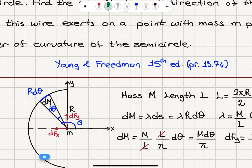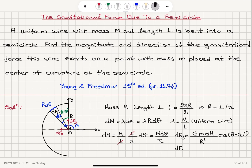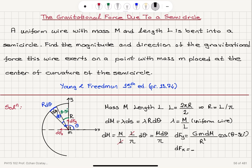The angle between the radial direction and the vertical is θ − 90°. For the x-component, dFx points in the −î direction because this is an attractive force directed radially toward the mass element. So dFx = −G·m·dm/R² · sin(θ − 90°) in the −î direction.